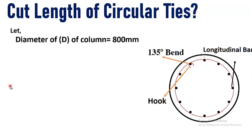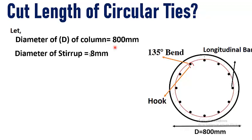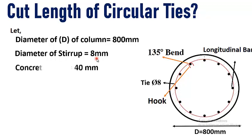Let's suppose the external diameter of a column including concrete cover is 800 millimeters. The diameter of a stirrup or tie, shown in red, uses a minimum bar diameter of 8 millimeters — the minimum diameter of a stirrup or tie should be 8 millimeters. The concrete cover is 40 millimeters, which is the distance between the formwork and the reinforcement of a column or beam.